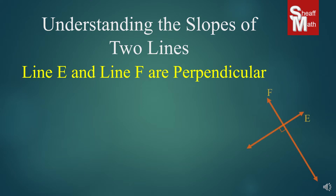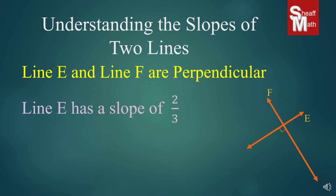Now, for perpendicular lines, we have line E and line F. Line E has a slope of 2/3. A lot of people think line F is just going to be the opposite, like negative 2/3, but it's not. It's an opposite and reciprocal. Since this is the first time we've seen this, I'm going to teach you a little bit about opposite reciprocals.